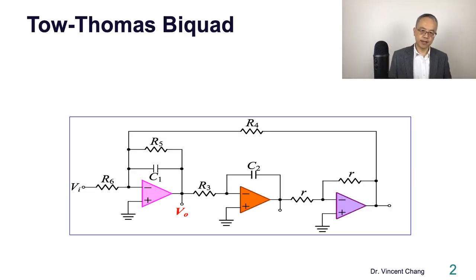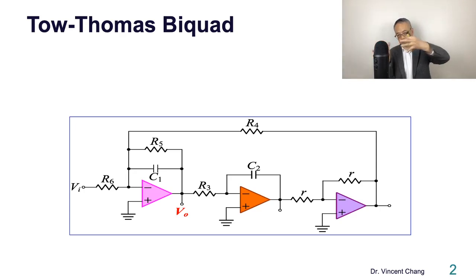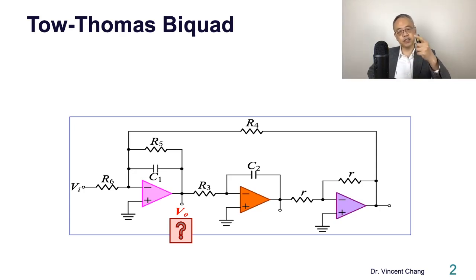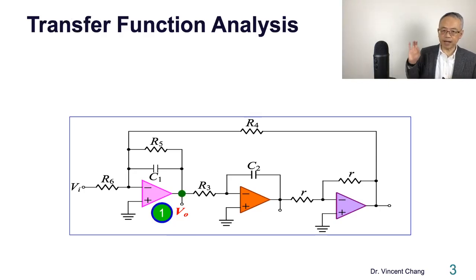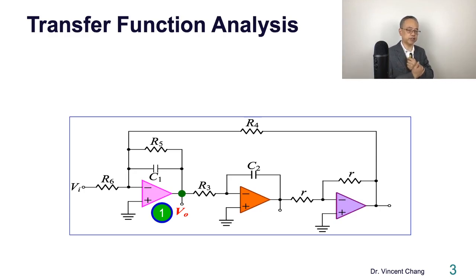In this first circuit, the output is taken from the output of the first integrator. The first integrator not only serves the integration function but also the addition function. So what kind of filter function does this provide? It's the band-pass function. Now, can you get the transfer function?